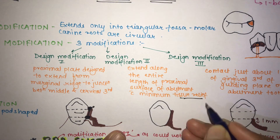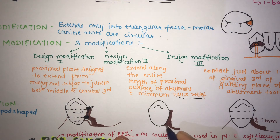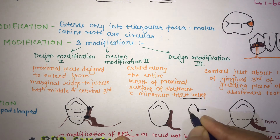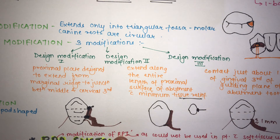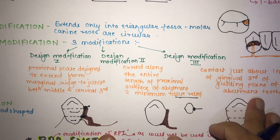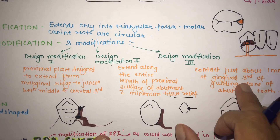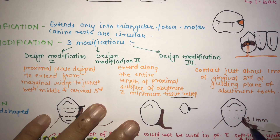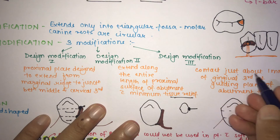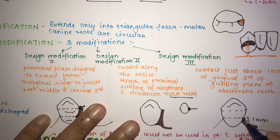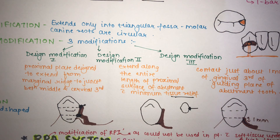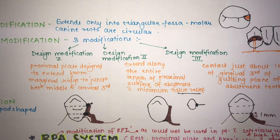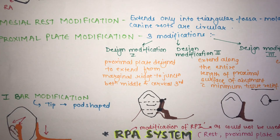The relief is given at the gingival margin where the tooth and tissue meet, at the tooth-tissue junction. The third proximal plate modification states that contact is just about one mm of the gingival third of the guiding plane of the abutment tooth. The purpose of reducing the length of the proximal plate is to improve gingival health. In the normal I-bar system the proximal plate extends 2 mm beyond the tooth-tissue junction, whereas here contact is limited to 1 mm of the gingival third.